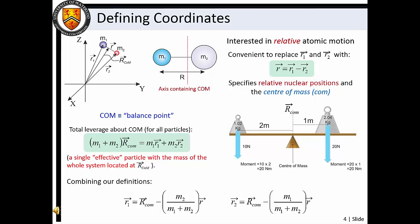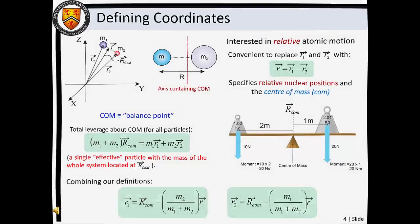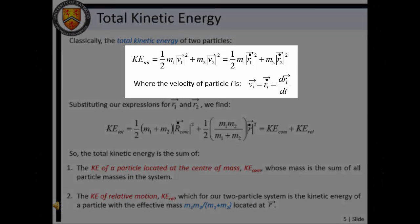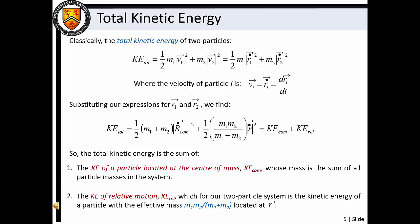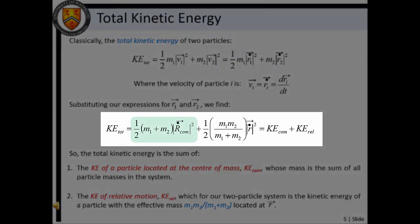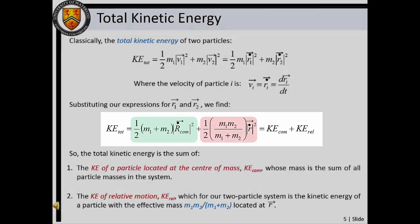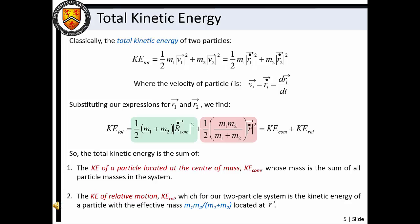The total leverage about the center of mass for all particles is equal to that of a single particle with the mass of the whole system located at the center of mass. If we combine this definition of leverage with our definition for relative nuclear position, we see that our nuclear coordinates can be expressed in terms of the center of mass and the mass-weighted relative positions. Knowing that the total kinetic energy for our molecule will be the sum of the atomic kinetic energies, substitution of our particle coordinates shows that the total kinetic energy may be thought of as a sum of the center of mass kinetic energy and the relative nuclear kinetic energy. The center of mass kinetic energy is the energy of translational motion as our molecule travels through space, while the relative nuclear kinetic energy is associated with molecular vibration and rotation. For now we'll assume that our molecule is not vibrating and focus only on molecular rotation.